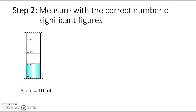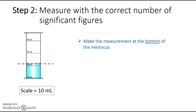Once you've determined the scale, you're ready to make your measurement. When using glass graduated cylinders with an aqueous solution, you'll see a curved top called the meniscus. You want to make your measurement at the bottom of the meniscus. You also need to read the volume with the meniscus at eye level, which often means squatting down so your face is right in front of the graduated cylinder.